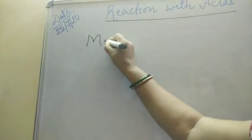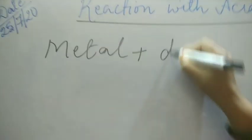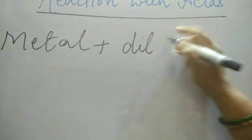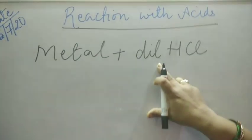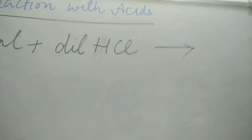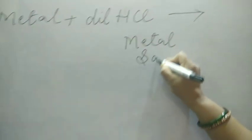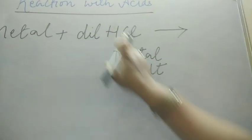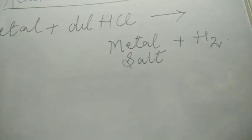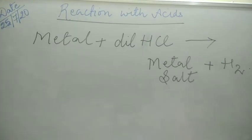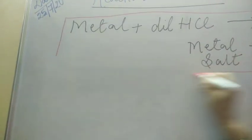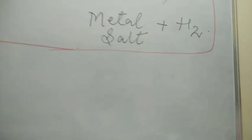First we will talk about metals when they react with acid. I will take dilute acids - specifically dilute hydrochloric acid - because concentrated acid is highly reactive, so we take the acid in dilute form. Dilute means acid plus water. So the general formula is: metal plus dilute hydrochloric acid gives metal salt plus hydrogen gas. Always remember this formula for the chemical equation of metal reacting with acid.